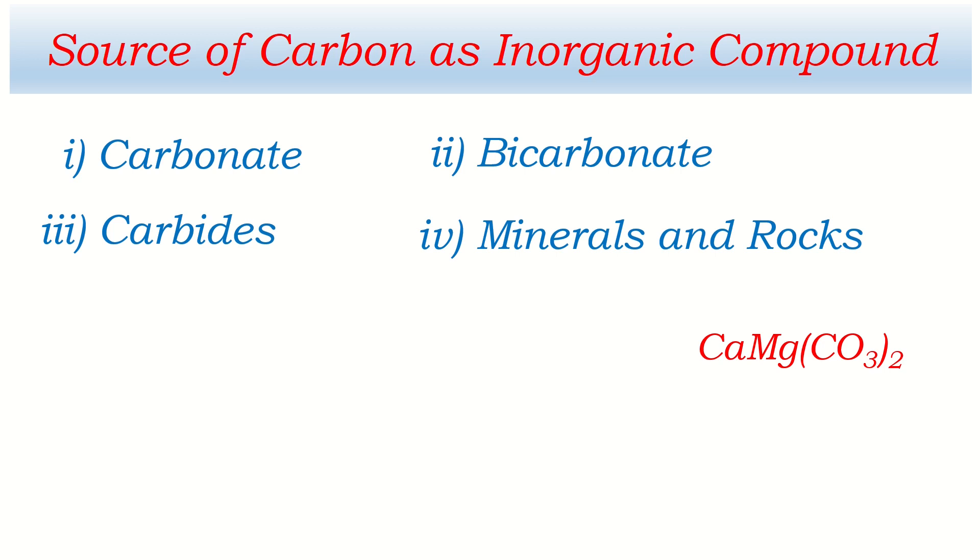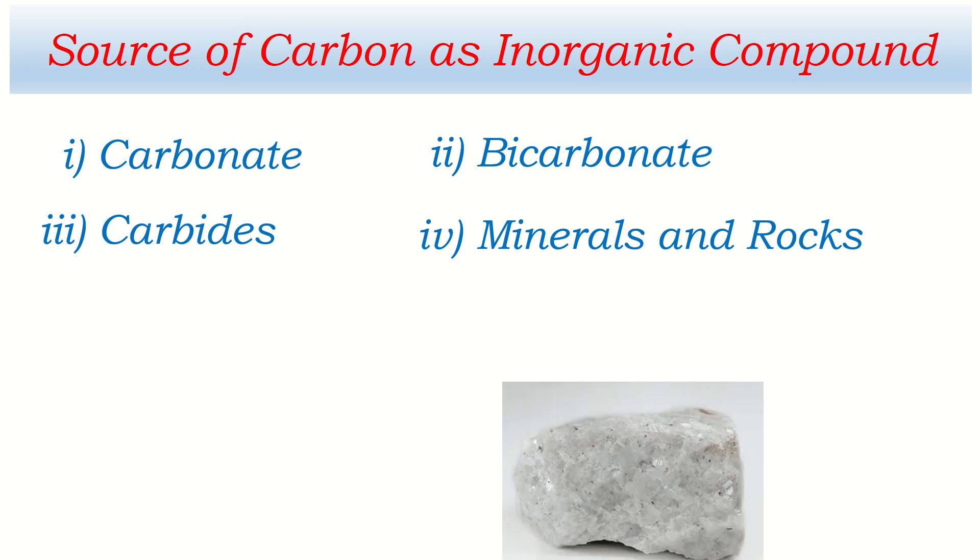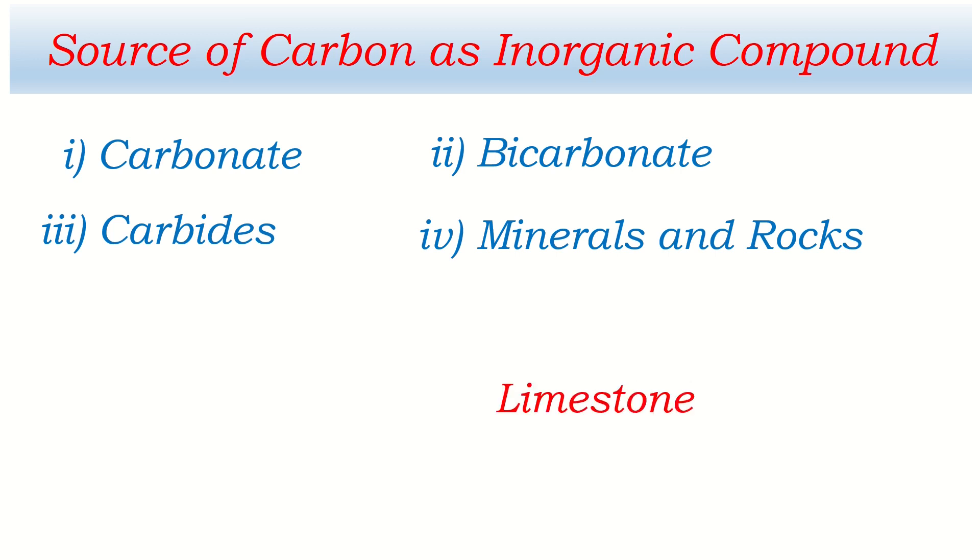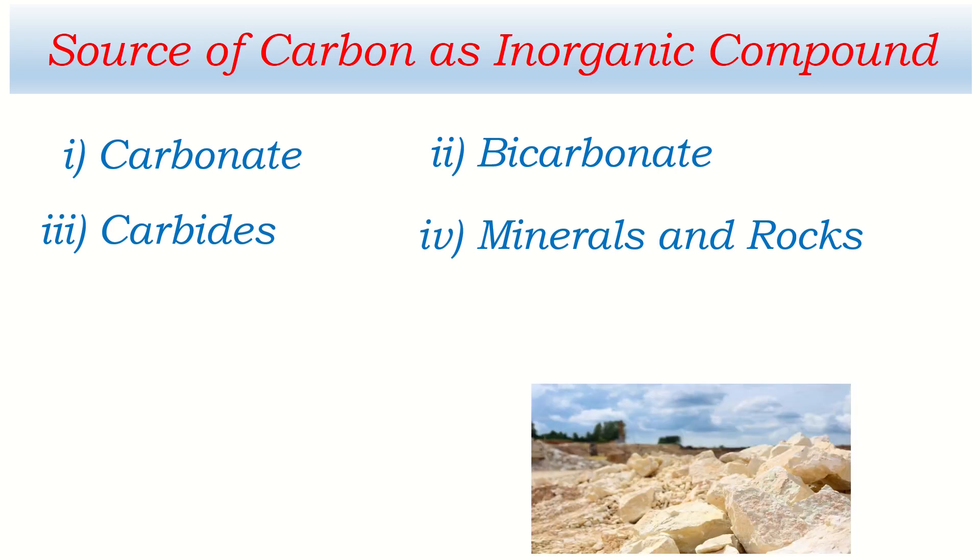That's why it is a source of carbon. And dolomite looks like this. And limestone is the rock and its formula is CaCO3 and it looks like this. These are the inorganic compounds which contain carbon and are called sources of carbon.